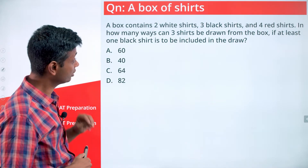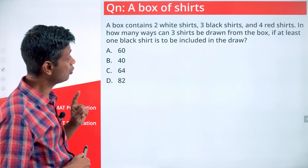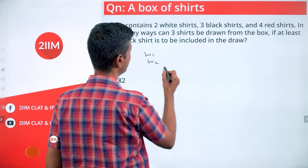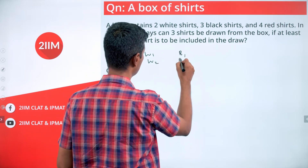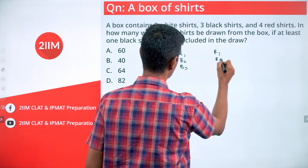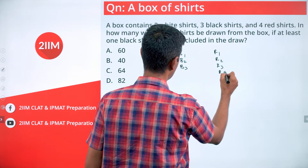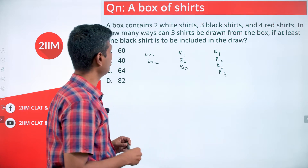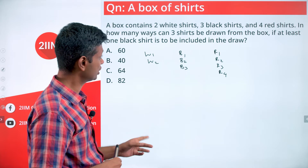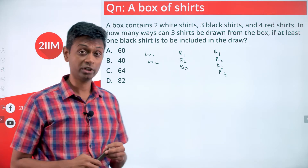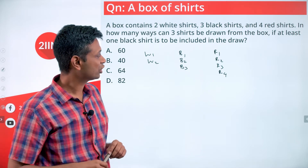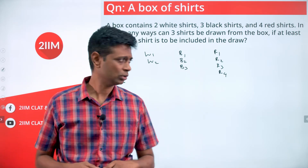A box contains two white shirts W1, W2, three black shirts B1, B2, B3, and four red shirts R1, R2, R3, R4. In how many ways can three shirts be drawn from the box if at least one black shirt is to be included? The number of black shirts should be at least one.